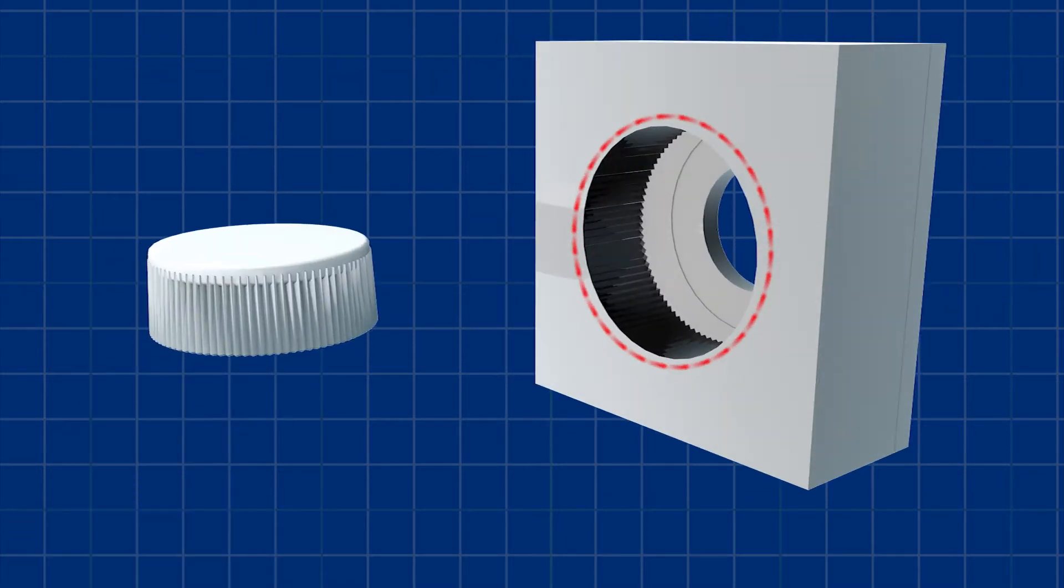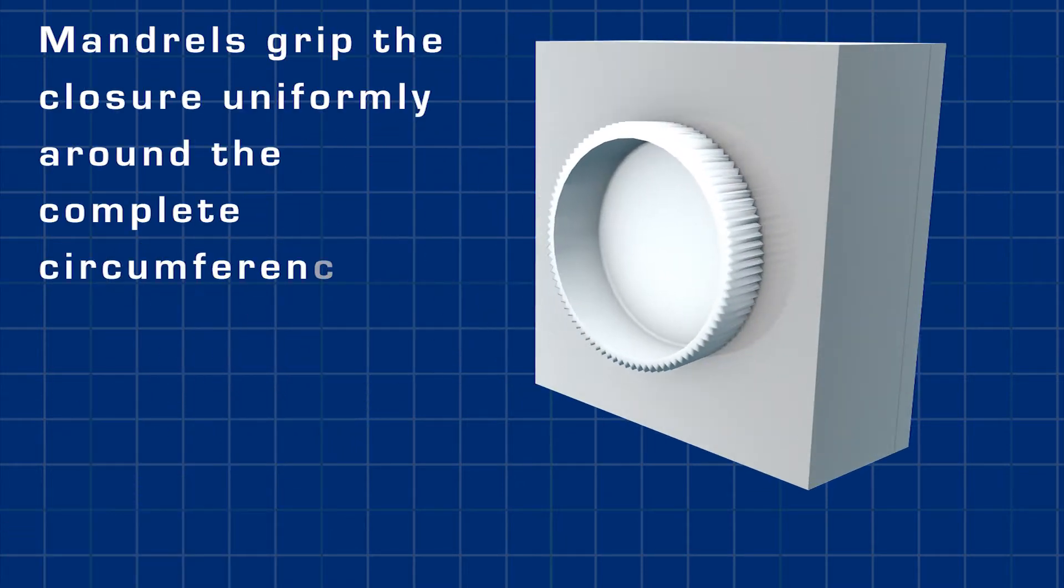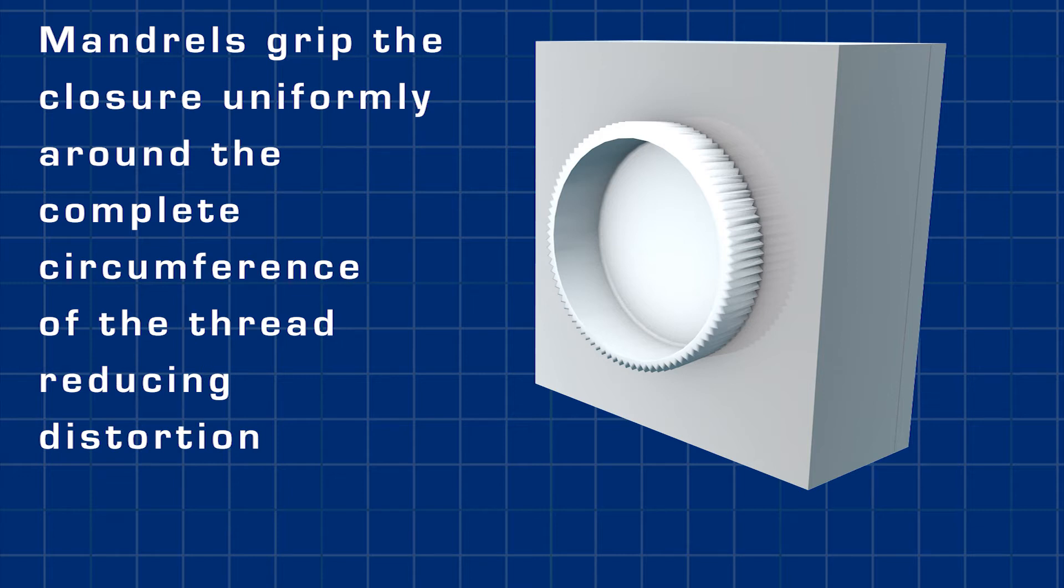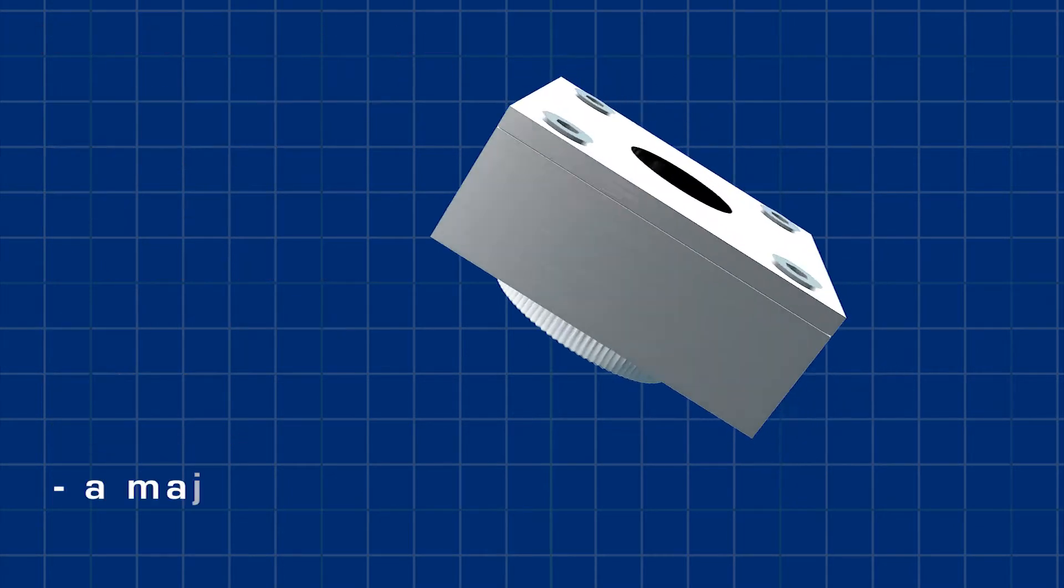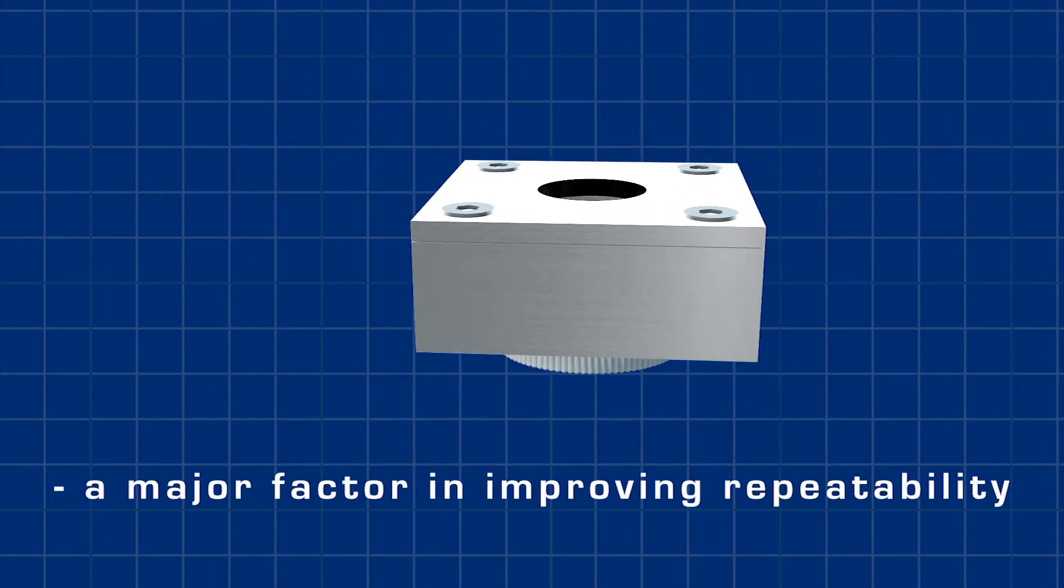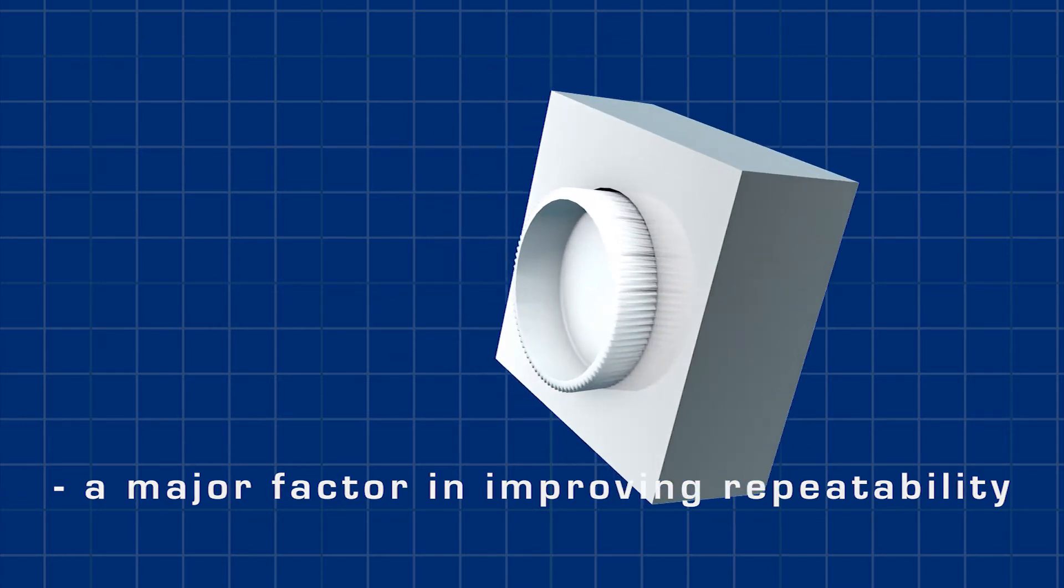The mandrel is usually fitted to the part of the closure that is to be removed and provides several functions. Mandrels grip the closure uniformly around the complete circumference of the thread, reducing distortion, a major factor in improving repeatability.